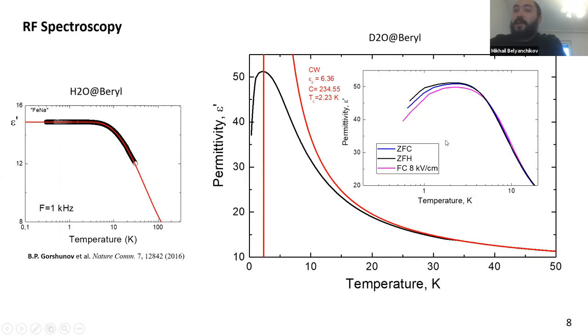In the sample, the dielectric properties in contrast to the previously studied light water beryl - there in the temperature dependence of permittivity after following the Curie-Weiss, we observed the saturation of permittivity. Here we can see the qualitatively different behavior. The permittivity at high temperatures first follows the Curie-Weiss behavior, but after that, the permittivity goes downward at around the Curie temperature, around 2 Kelvin. And this is the typical signature of the phase transition.